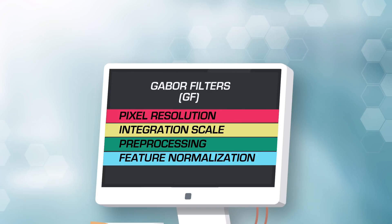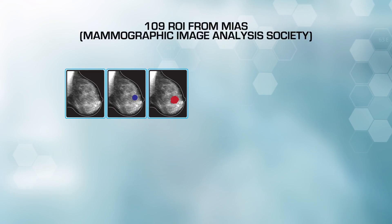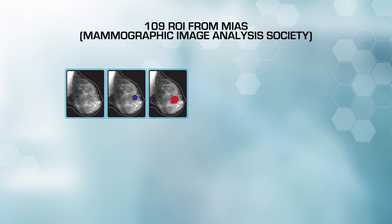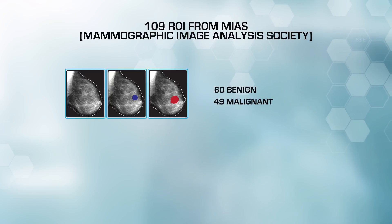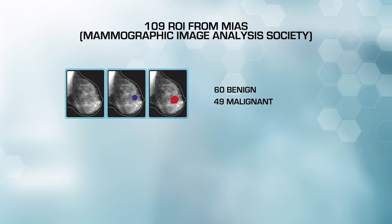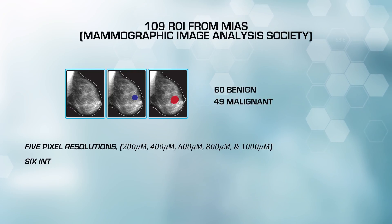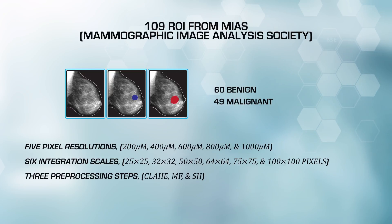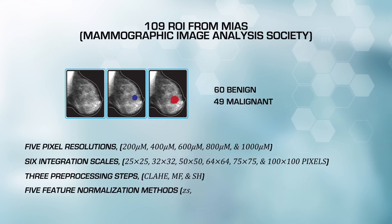Previously, only the effect of pixel resolution had been reported. In this study, 109 ROIs containing lesions from the Mini-Mias database were extracted and classified as benign or malignant per each of the five methods. The performance of each method was evaluated against five pixel resolutions, six integration scales, three pre-processing steps, and five feature normalization methods.